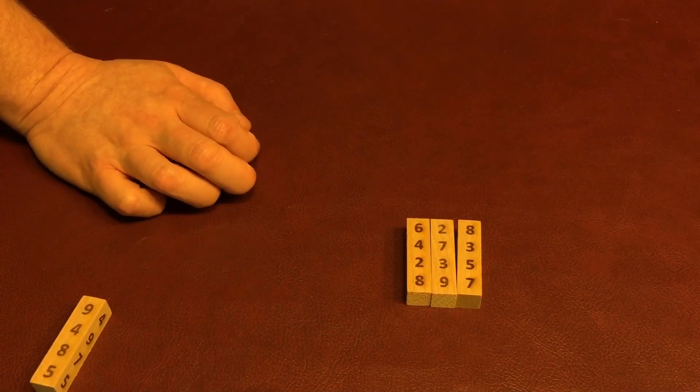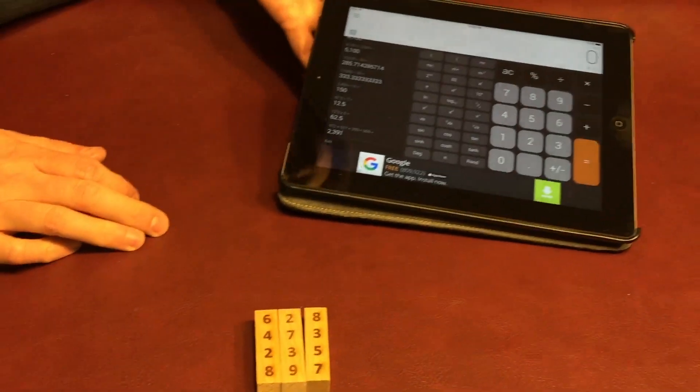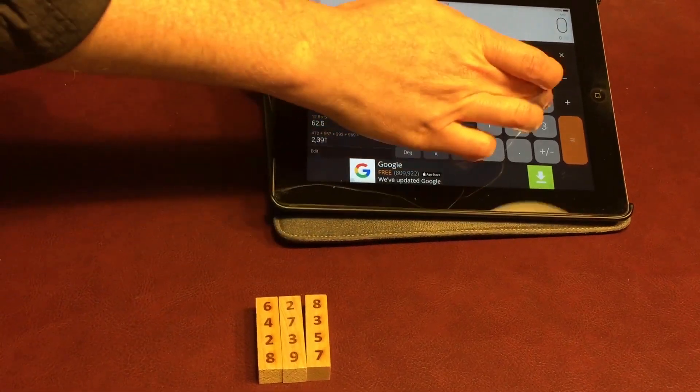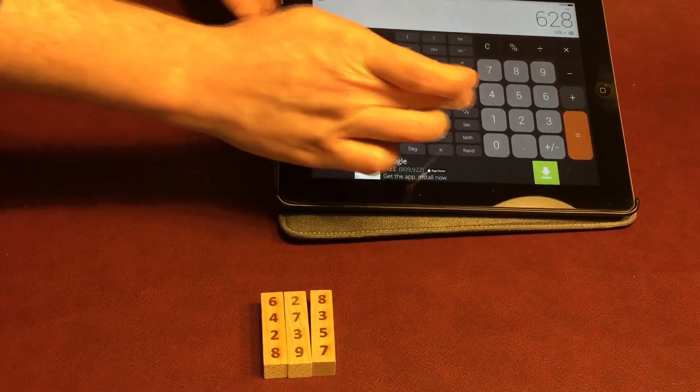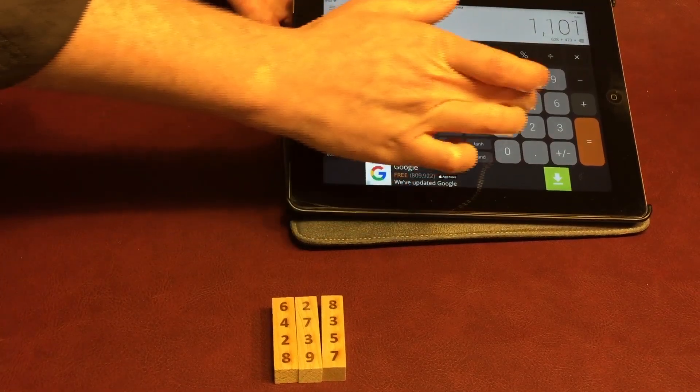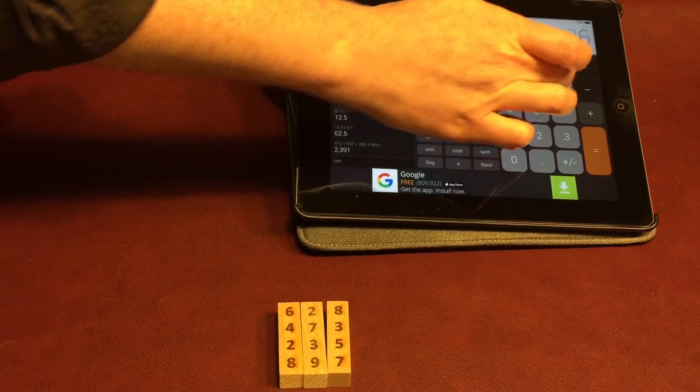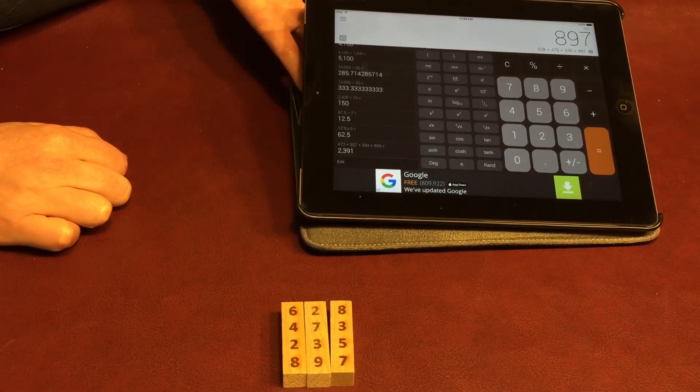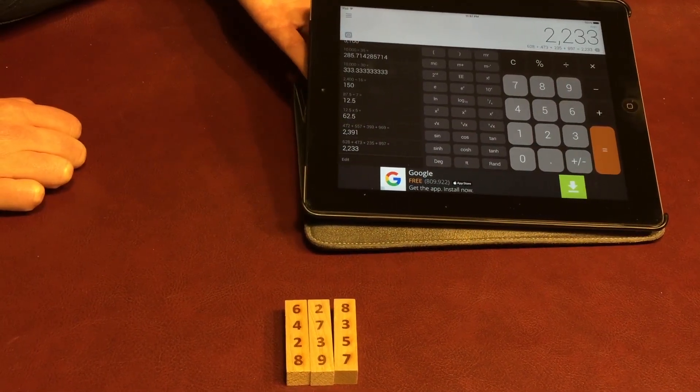And I can tell you right now the total is 2,233. So remember that, 2,233. Let's go ahead and add them up. That's 628 plus 473 plus 235 plus 897 equals, what number did I say before? It was 2,233 equals, there it is, 2,233.